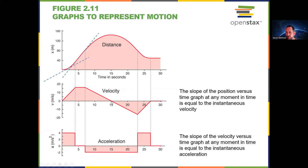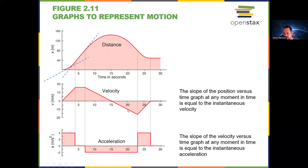In this case, the velocities are all negative, but the object is speeding up. Think about how fast the object is going at 15 seconds — it's going zero meters per second. So it can only speed up from there. At about 18 seconds it's going about five meters per second, at 20 seconds about 10 meters per second, and at 23 seconds about 15 meters per second.